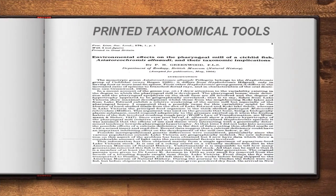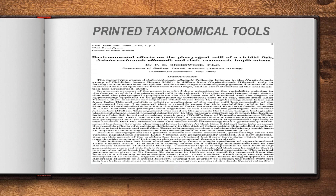Printed taxonomical tools refer to textbooks and books that contain the entire description of a particular species or organisms, written by various authors. When we go to a library, we can collect many books and gather details about species. So classical taxonomical tools include: taxonomical keys, museum, zoological park, marine park, and printed taxonomical tools.